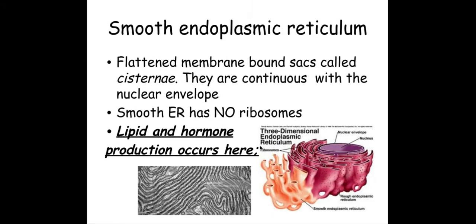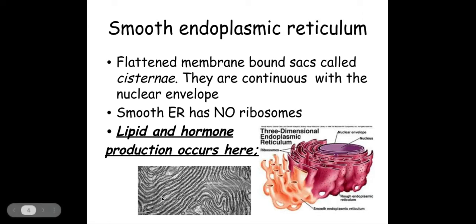The smooth ER is again a continuation of the rough ER, but the smooth ER does not have any ribosomes on it — therefore it appears smooth under a TEM image. There are no dots on it, and this is involved with lipid and hormone production.